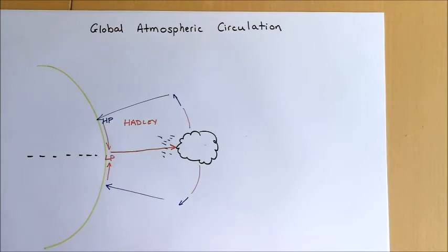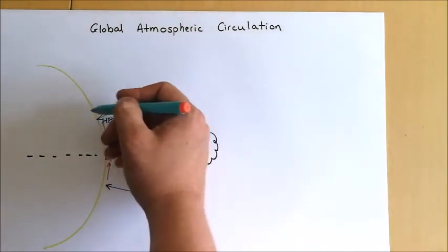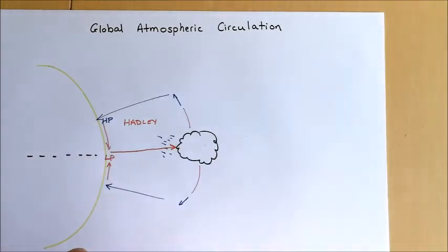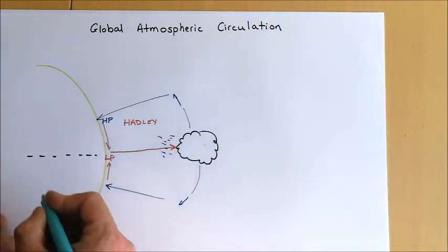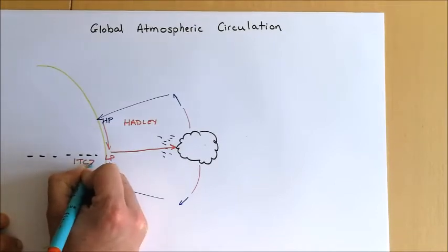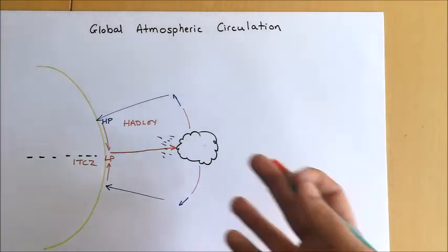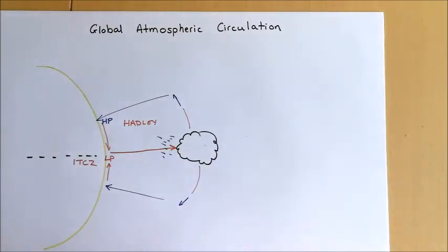This point where the air is converging in towards each other, coming in from both directions from the tropics, we call the Intertropical Convergence Zone, or the ITCZ. The ITCZ is characterized by very unstable conditions, lots of warm rising air, high amounts of low pressure, resulting in that intense rainfall that creates our tropical rainforest.